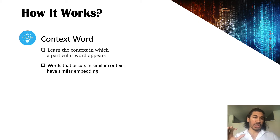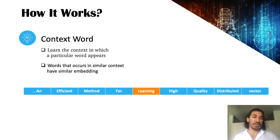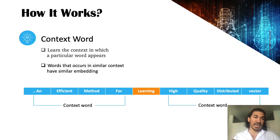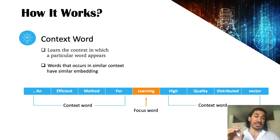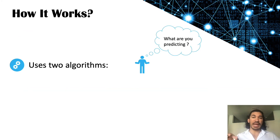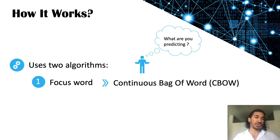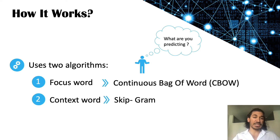The main idea is the context word — learn the context in which a particular word appears, and words that occur in a similar context have a similar embedding. For example, in the sentence 'an effective method for learning high quality distribution vector,' the context words are the four words on each side of our focus word 'learning.' There are two algorithms behind how Word2Vec works: if you're trying to predict the focus word, we use Continuous Bag of Words (CBOW); if you're trying to predict the context word, we use the Skip-gram model.